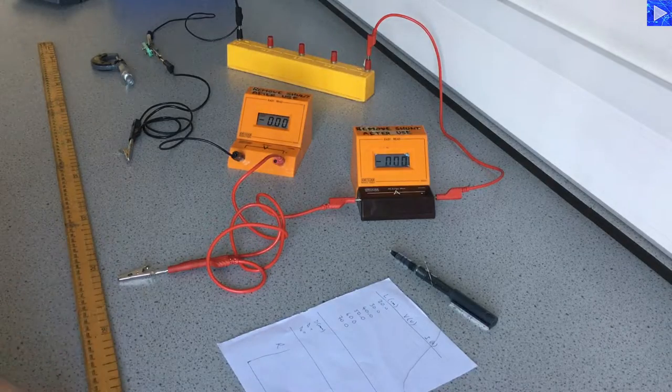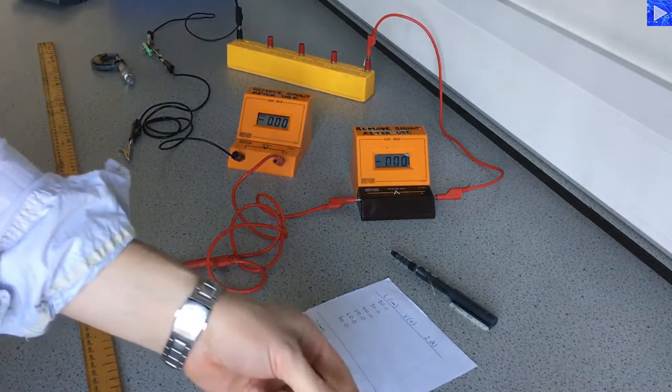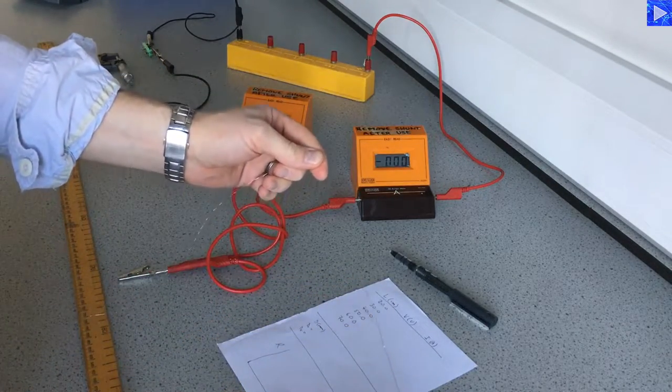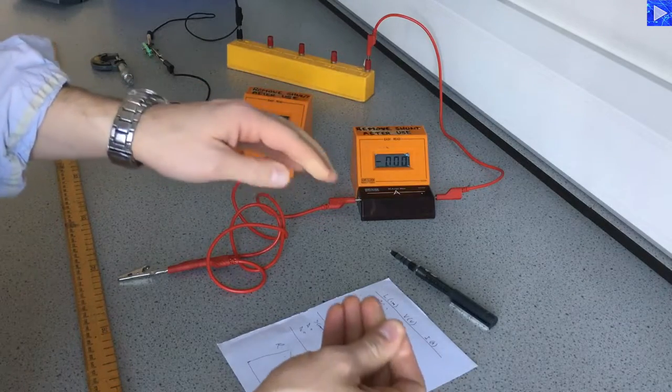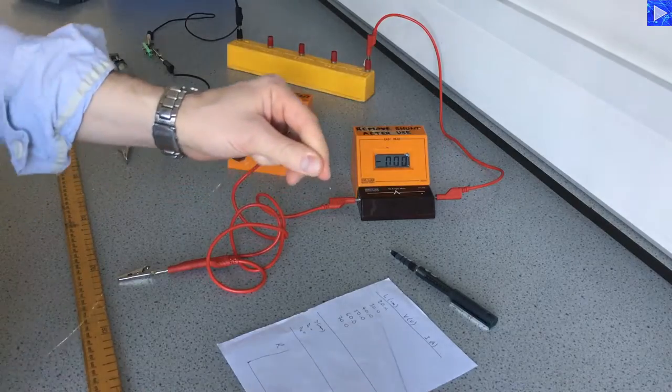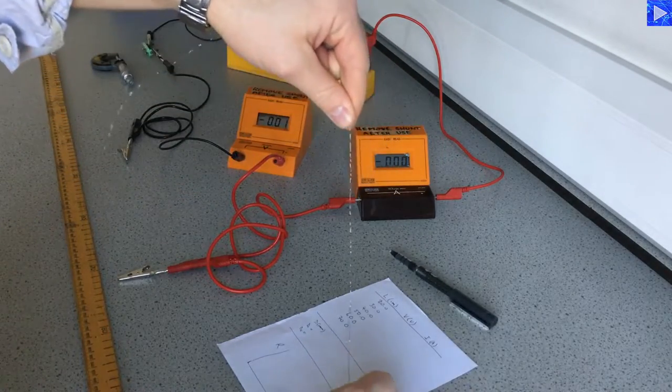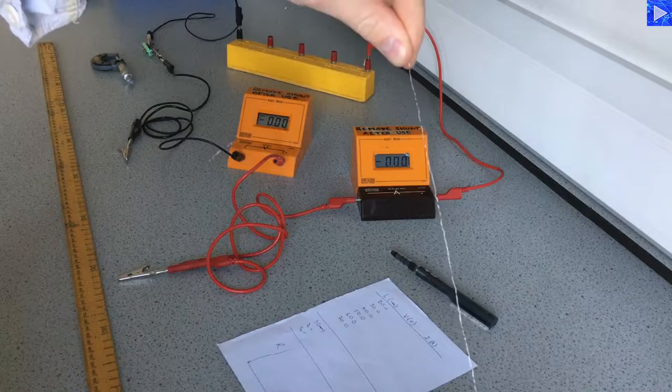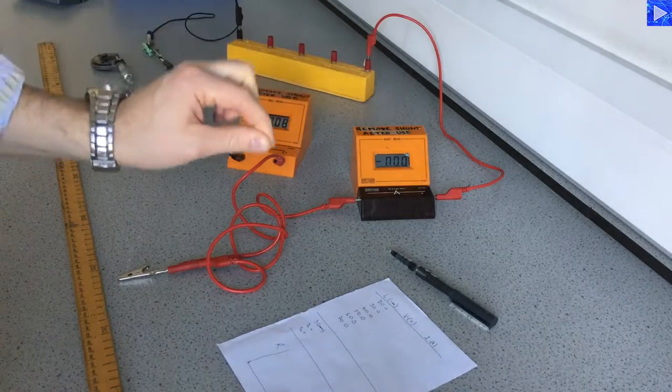This is an experiment to determine the resistivity of a metal wire. This is the wire that I will be using to take measurements for. It's a wire made out of a metal called Constantin. It's very thin, so you should be able to see it with the paper as a background there. That's the wire.